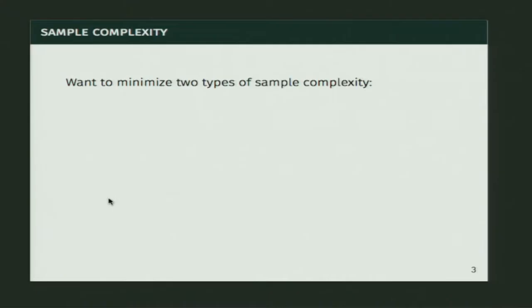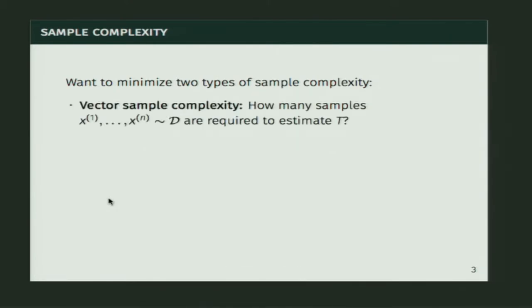There are two types of sample complexity we care about when learning Toeplitz covariance matrices. The first is the classic notion — vector sample complexity — which is how many samples we actually need from our distribution to get a good estimate of the covariance matrix T. I call it vector sample complexity because it's how many vectors we need to sample from our d-dimensional distribution. If you could estimate one row of the covariance, you can estimate the covariance matrix since there are fewer parameters.